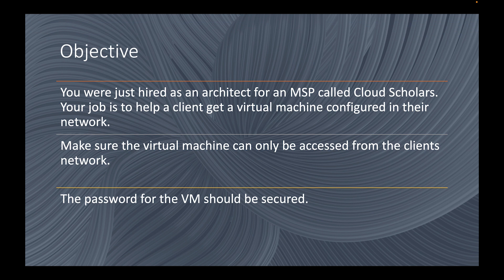This is going to be a series within a series — we have the Terraform Azure Beginners series which blankets everything, but I'm also going to have these little challenges within it just to do something fun. I like to come up with little objectives and scenarios. The objective here is: you are hired as an architect for an MSP called Cloud Scholars. Your job is to help a client get a virtual machine configured in their network, make sure the VM can only be accessed from the client's network, and the password for the VM should be secured.